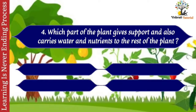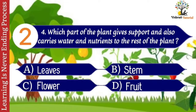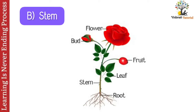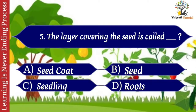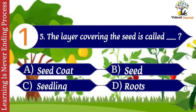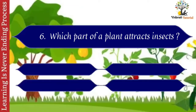Question number four: which part of the plant gives support and also carries water and nutrition to the rest of the plant? Options: A. Leaves, B. Stem, C. Flower, D. Fruit. The correct answer is B. Stem. Stem is a part of the plant which gives support and also carries water and nutrition to the rest of the plant. Question number five: the layer covering the seed is called dash. Options: A. Seed coat, B. Seed, C. Seedling, D. Roots. The correct answer is A. Seed coat. The layer covering the seed is called seed coat.